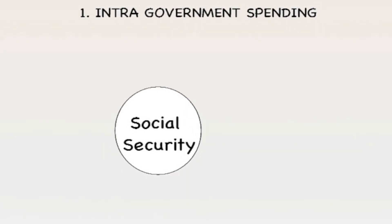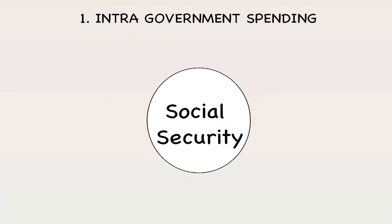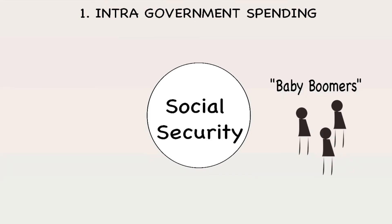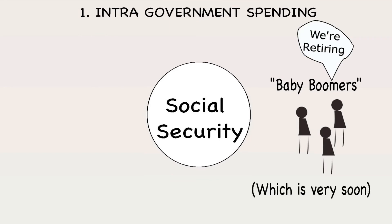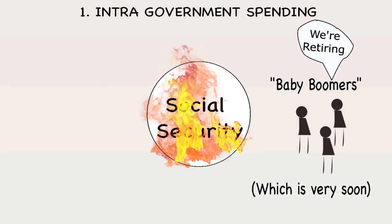Right now, the Social Security Fund is running a surplus, meaning more people are paying into Social Security than it is paying out. This is primarily thanks to the so-called generation of baby boomers, who for the most part are still in the workforce and are therefore still paying into Social Security. So the government has been borrowing from the Social Security Fund and giving it to other departments that need the money. This is all good for now, but when the baby boomers start retiring — which is very soon — the Social Security Fund is going to be in serious trouble.